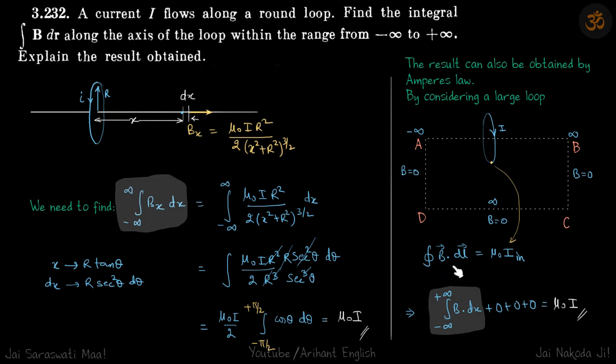This line integral for only AB will have some value. For BC, CD, and DA it will be 0 because B is 0. So we could have obtained the same result using Ampere's law without the calculation.